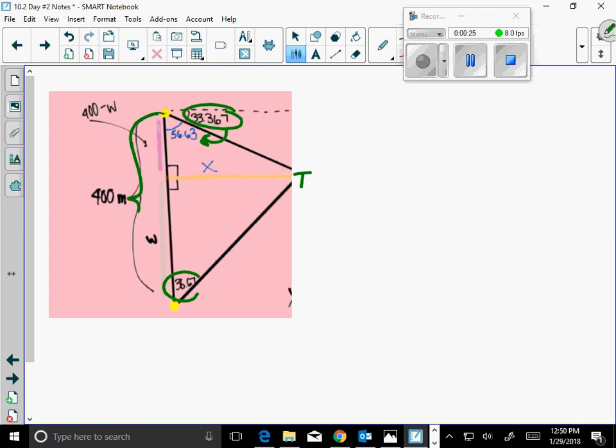We were told that this is 400 meters, and we wanted to find X. So right triangle trig, knowing that this was 400 meters over here, I could set this length equal to 400 minus some value W, and therefore this length over here would be W. So if I took 400 minus W plus W, I'd get 400.